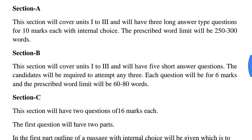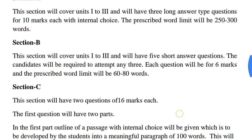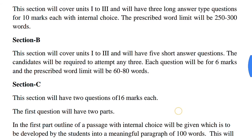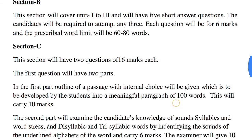Section B will cover units from first to third and will have five short answer type questions. The candidates will be required to attempt any three. Each question will be for six marks and the prescribed word limit will be 60 to 80 words.